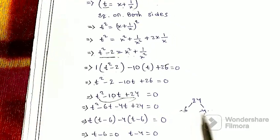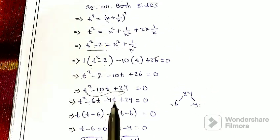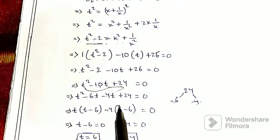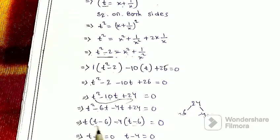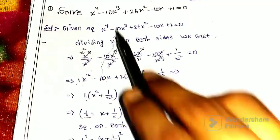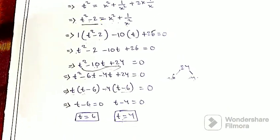Factoring t² minus 10t plus 24: 6 times 4 is 24, and 6 plus 4 is 10, so minus 6 minus 4 gives minus 10. The factors are (t minus 6)(t minus 4) equals 0. So we find two values: t equals 6 and t equals 4.